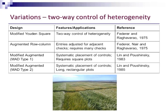One modification of interest is the modified augmented designs shown at the bottom. These actually use systematic placement of controls, which has some desirable features. There was a Type II modification, particularly for the case where you have long rectangular plots. As you can see in the picture, those are some barley test plots, and the barley breeding program here is using these MAD Type II designs in the preliminary stages of their breeding program.